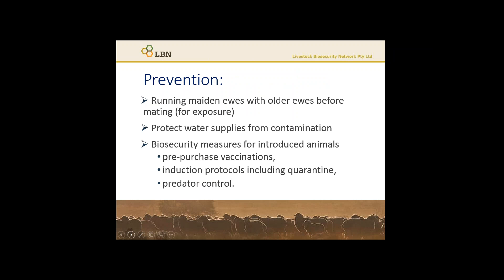Prevention strategies for sheep include improving the exposure of naive sheep prior to being joined — running maiden ewes with older ewes before mating is one measure you can take. Biosecurity measures include protecting water supplies from contamination by using reticulated water rather than letting sheep water at springs and dams, and cleaning troughs regularly in case predation has spread matter into them. Also undertaking biosecurity measures such as pre-purchase vaccinations for introduced animals, induction protocols including quarantine, and undertaking predator control activities.